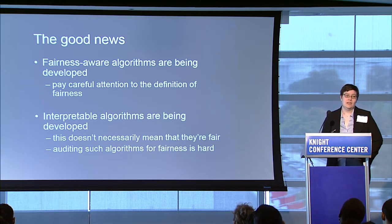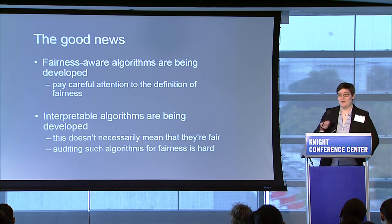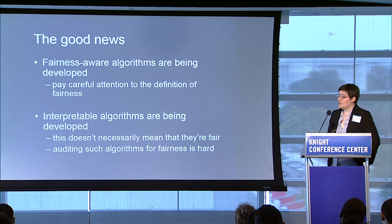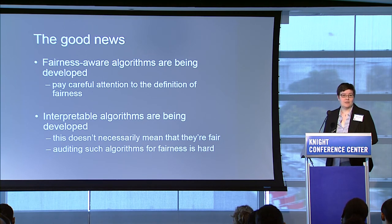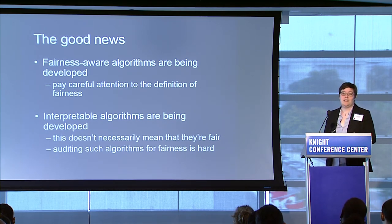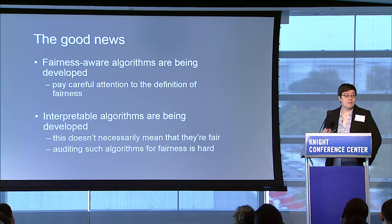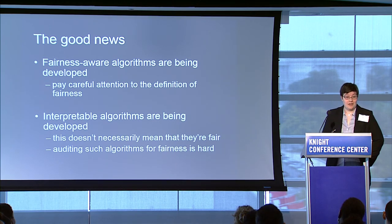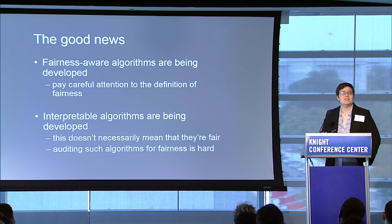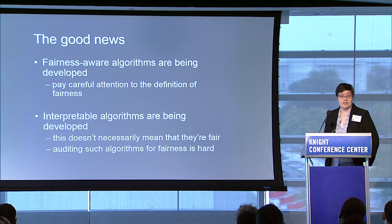Finally, some good news: researchers on the computer science side are in fact working on this, specifically on ways that these algorithms can be applied in a fair way. The important thing to notice is exactly what definition of 'fair' is being used, because that will be the crux of the matter. So when computer scientists say they have a fair algorithm, your response should be: what is your definition of fair? This all goes back to evaluation. The second point is interpretability — understanding what aspects are going into the algorithm and how it makes decisions. But that does not necessarily mean it was fair, and auditing these algorithms, even if you know everything about them, is still very hard and an area of active research.